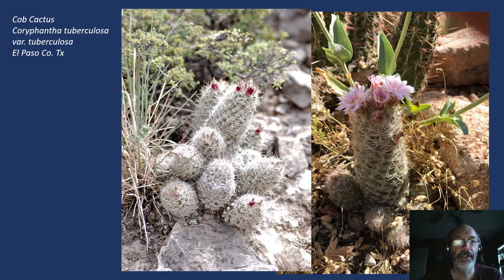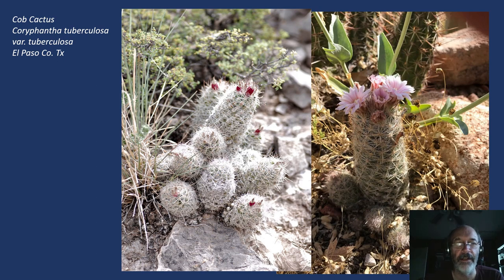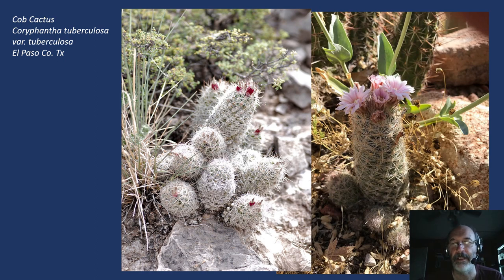Then another Coryphantha — Coryphantha tuberculosa. This one I'm sure has been transferred to Escobaria. Nonetheless, it's a very common plant in the Franklin Mountains in El Paso County, and in many other mountain ranges to the south and southeast of us. As the plant grows, it loses spines at the base, which is where it gets its name, cob cactus. In extreme cases with many spines gone, you really have a very corncob-looking arrangement. One variety is tuberculosa, another I believe is variety varicolor.